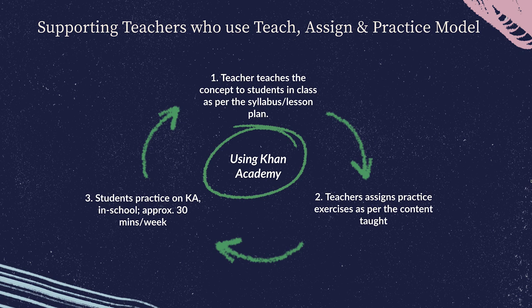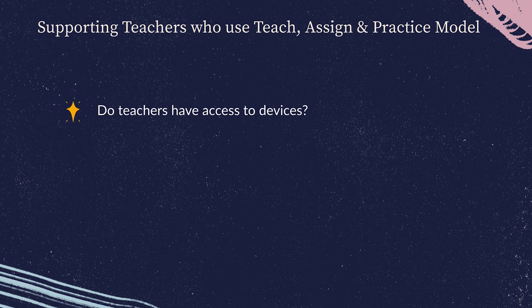The first model is Teach, Assign and Practice. As we have seen in the previous video, in this model students practice on Khan Academy in the school itself. For this model to succeed, here are two concrete ways in which you can support the teachers. First and foremost, find out which of your teachers have chosen this model. The next step is to check whether these teachers have been able to get access to devices for all their students in the class. Teachers would need at least one device for each group of up to five students.